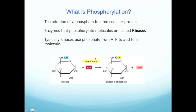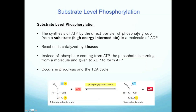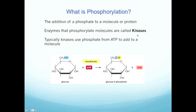In most cases, phosphorylation occurs by proteins called kinases. These are enzymes that catalyze this phosphorylation. Typically, kinases use phosphate from a molecule of ATP to add to a molecule or a protein.